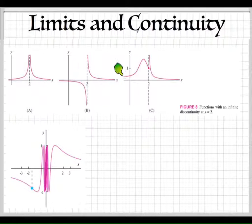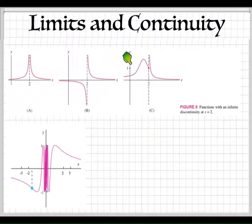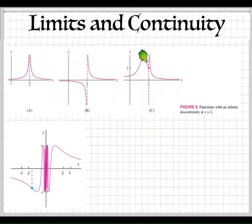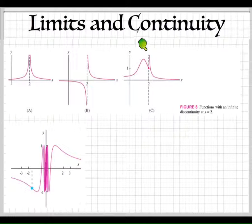What about this one? If I come from the left-hand side, is it continuous? Yes, it is. Because at 2 there's a solid dot, so all the way up to 2 it's continuous. After 2 it breaks right there, so we can't say the whole thing is continuous. Coming from the right-hand side, that's an infinite discontinuity.